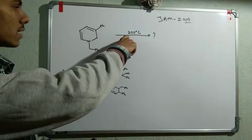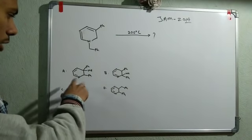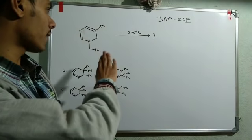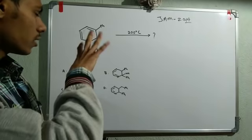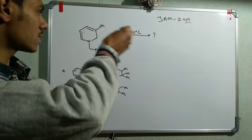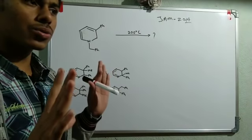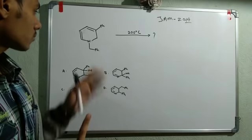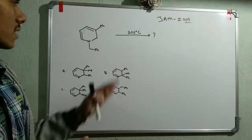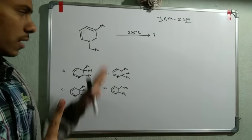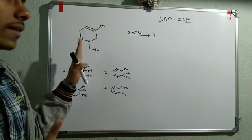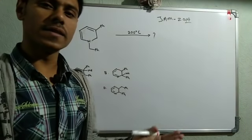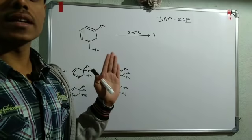You can see this compound is heated at 200 degrees centigrade, and these are the options given — what will be the product? The first thing you should identify is that it is a pericyclic reaction because no functional group and no reagent is given; only heat is given. So one thing you should recognize is that this is a pericyclic reaction, and specifically it is a thermal pericyclic reaction.